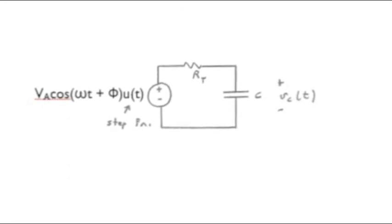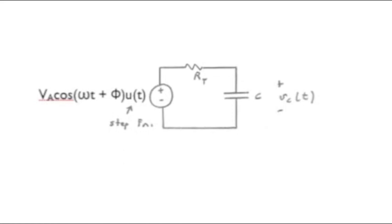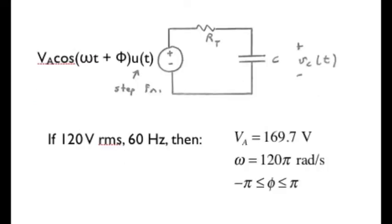Now, the step function is zero for T less than zero, and it's equal to one for T greater than zero. For a typical North American AC 120 volt RMS circuit, then, V sub A, the peak amplitude would be about 169.7 volts.